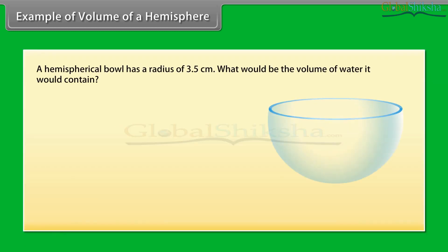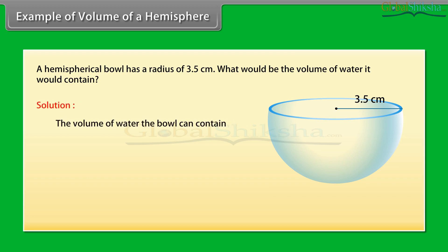Example of volume of a hemisphere. A hemispherical bowl has a radius of 3.5 cm. What would be the volume of water it would contain? The volume of water the bowl can contain is 2 upon 3 pi r cube, which equals 2/3 into 22/7 into 3.5 into 3.5 into 3.5 cm cube, which equals 89.8 cm cube.